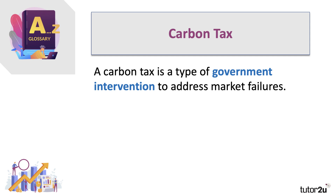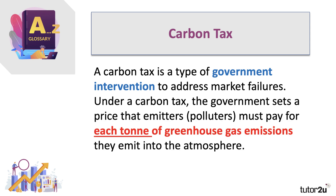A carbon tax is a type of government intervention, and it's designed to address one or more market failures. You may well have been studying the economics of externalities in particular — for example, pollution from factories, from transport and other industries — where the market may fail to allocate resources optimally. A carbon tax is a well-known approach to addressing these market failures. Under such a system, the government sets a tax that emitters or polluters must pay for each measured tonne of greenhouse gas emissions, CO2 emissions, that they emit into the atmosphere.